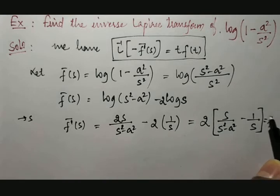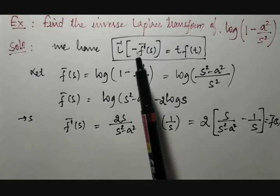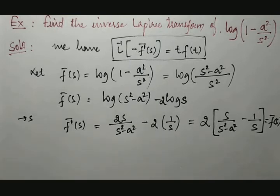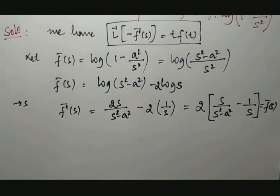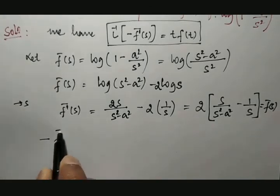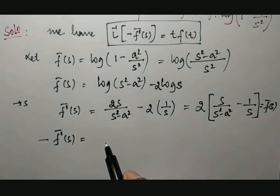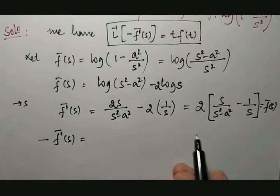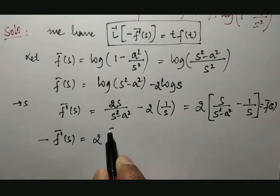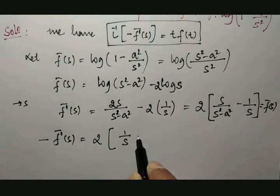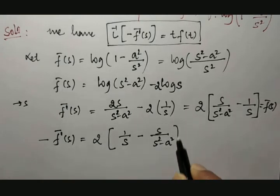This is f-bar-dash of s. After getting f-bar-dash of s, we need to multiply by minus. Applying minus on both sides and shuffling terms, minus f-bar-dash of s becomes 2 times 1 over s minus s over s-squared minus a-squared.